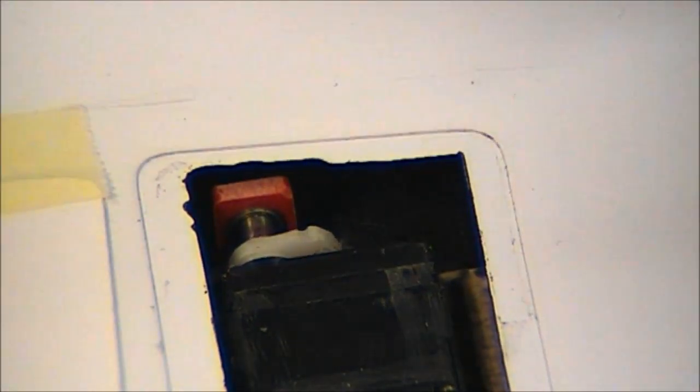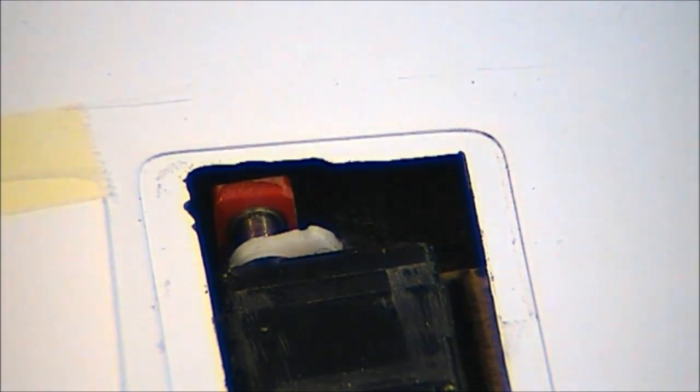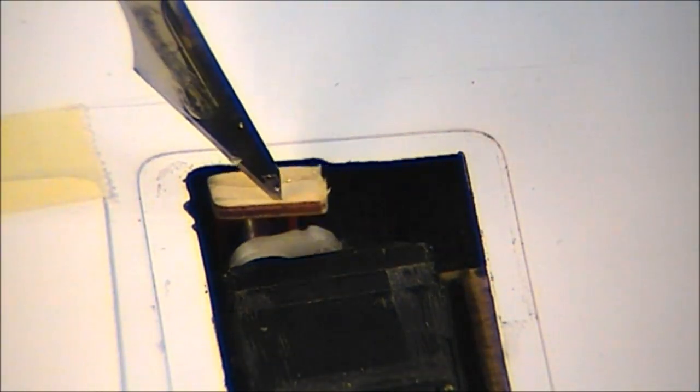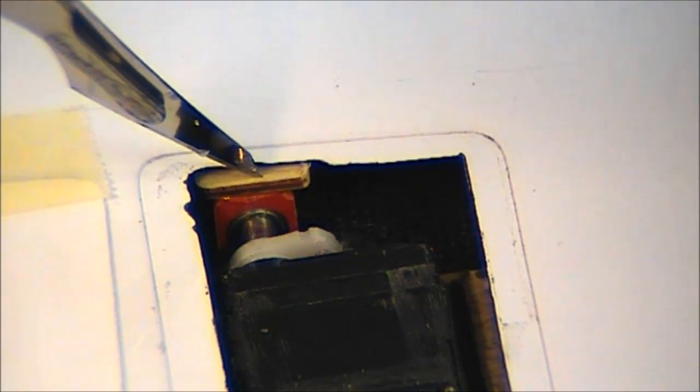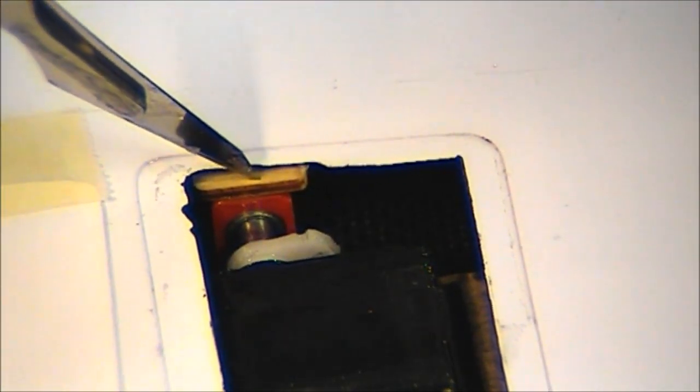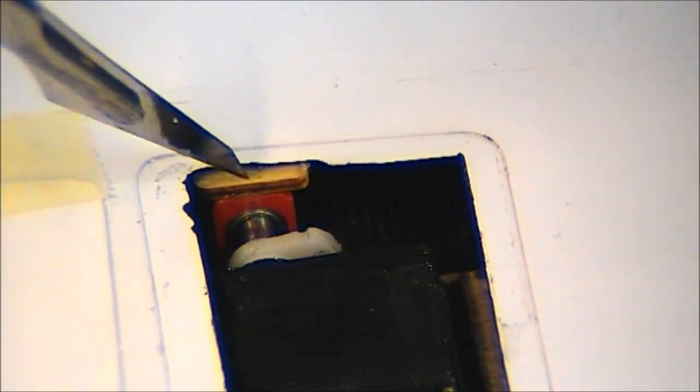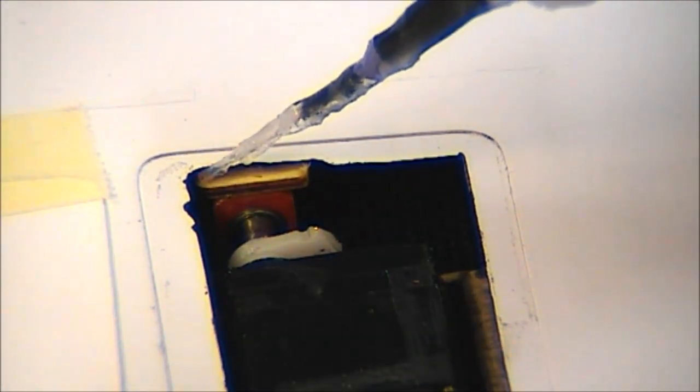I'm just using a bit of thick cyano here. What you don't want to be doing is gumming up the bearing, so be careful how you do this. Just to help it go off a little bit quicker, a bit of kicker. And a bit more cyano, just to attach it. Make sure you've attached it to the bottom skin.